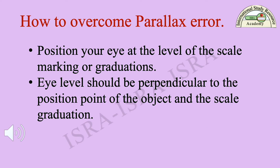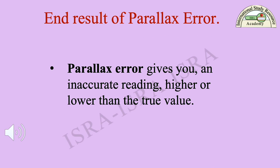How to overcome parallax error? Position your eye at the level of the scale marking or graduation. Eye level should be perpendicular to the position point of the object and the scale graduation. Parallax error gives you an inaccurate reading — higher or lower than the true value.